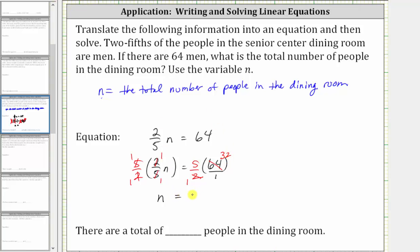And therefore, n is equal to 160, and therefore there are a total of 160 people in the dining room.